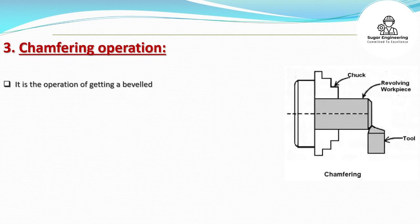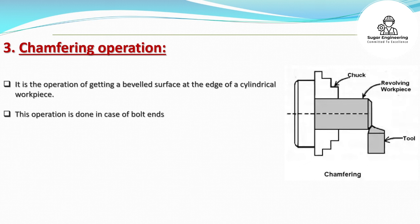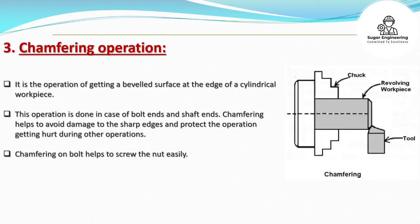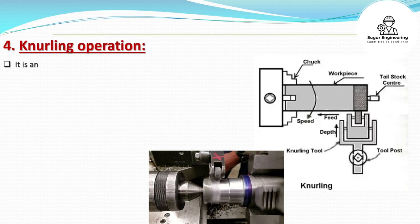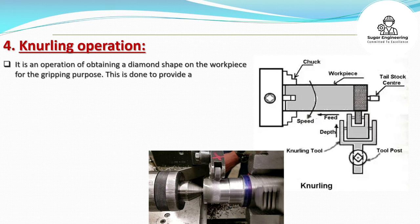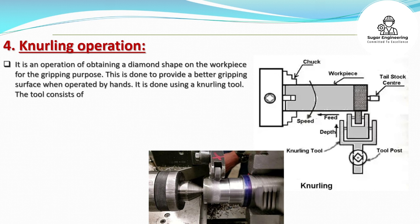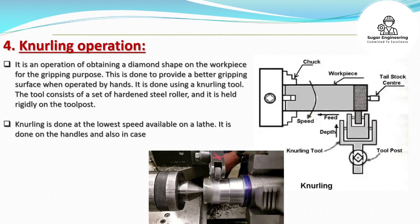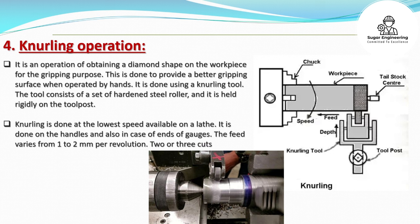Chamfering is the operation of getting a beveled surface at the edge of a cylindrical workpiece, done on bolt ends and shaft ends. It helps avoid damage to sharp edges and protects the operator. Chamfering on a bolt helps to screw the nut easily. Knurling is the operation of obtaining a diamond shape on the workpiece for gripping purposes, done using a knurling tool consisting of hardened steel rollers held rigidly on the tool post. It is done at the lowest speed, with feed varying from 1 to 2 mm per revolution, and two or three cuts may be needed.